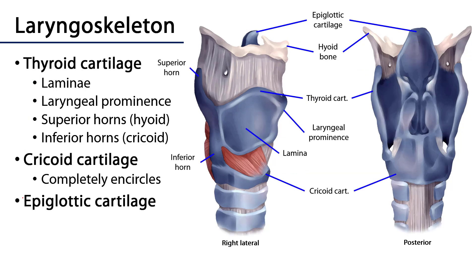Let's take a look at some of the features of the laryngoskeleton. The thyroid cartilage consists of two laminae that come together along the midline. That midline can sometimes be very robust, especially in individuals with a lot of testosterone, because testosterone builds muscle mass and muscle pulls on various features of the skeletal system and cartilage to exacerbate them. And so that's the laryngeal prominence, also known as the Adam's apple.